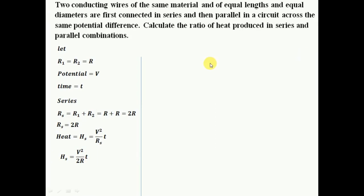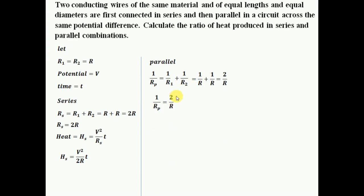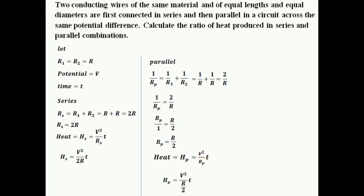For parallel combination, 1 by R_p equals 1 by R1 plus 1 by R2. Substituting R1 and R2 as R: 1 by R_p equals 2 by R, so reciprocating gives R_p equals R by 2. Now finding heat in parallel, H_p equals V squared by R_p times T. Substituting R_p equals R by 2, the 2 moves to the numerator, giving H_p equals 2V squared T divided by R.